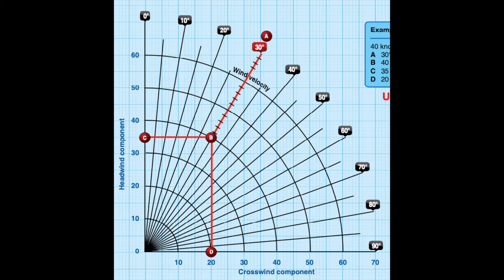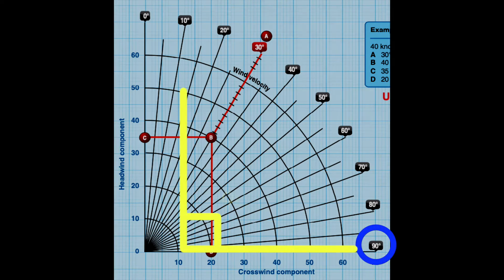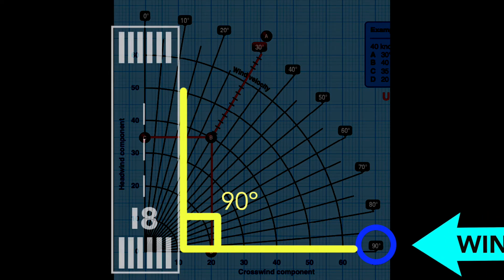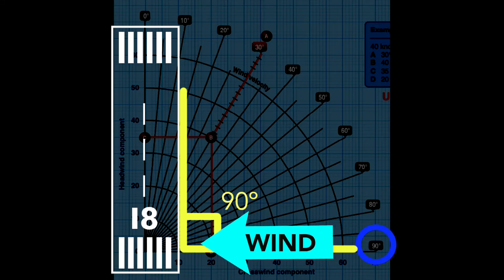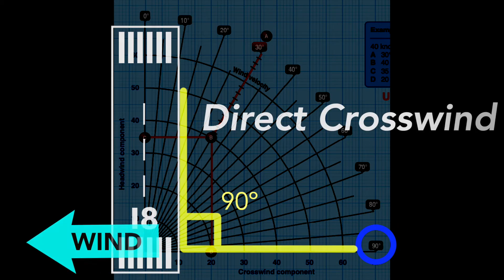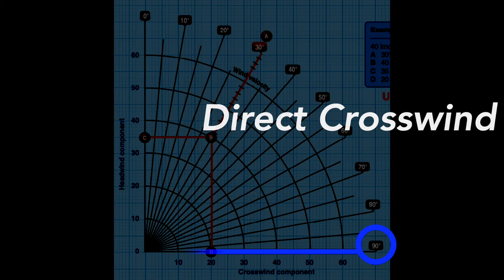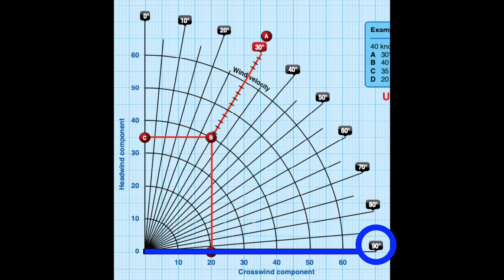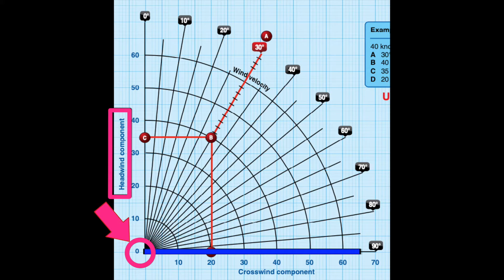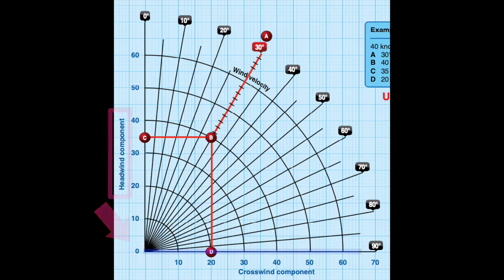If we look at the other corner of the chart, we have a 90 degree angular difference between wind and runway directions. That gives us a direct crosswind. In these cases the headwind component would be zero. All of that wind is dedicated to pushing the airplane to either side of the runway.